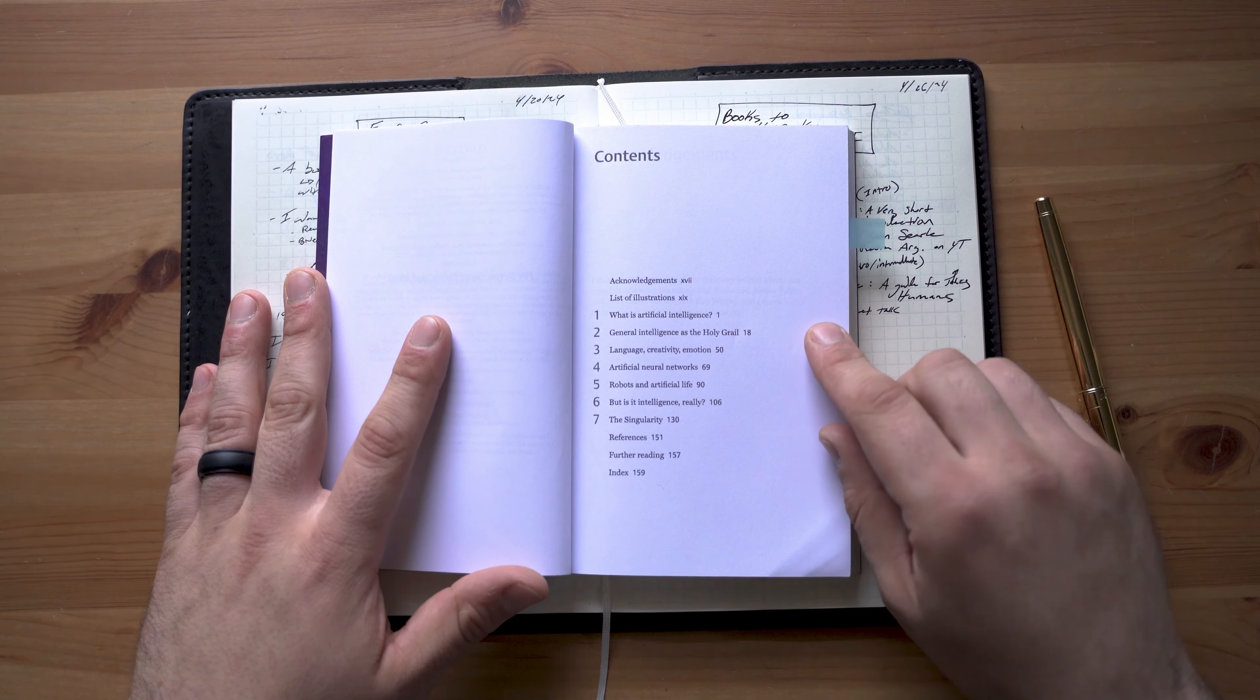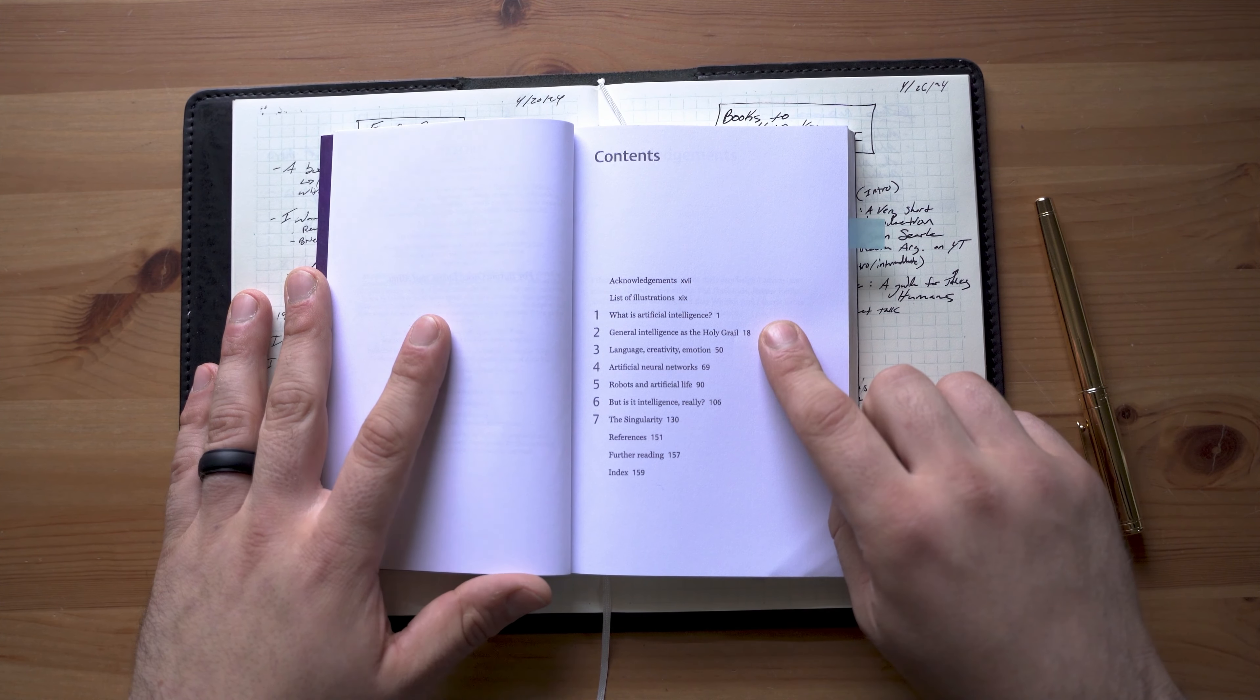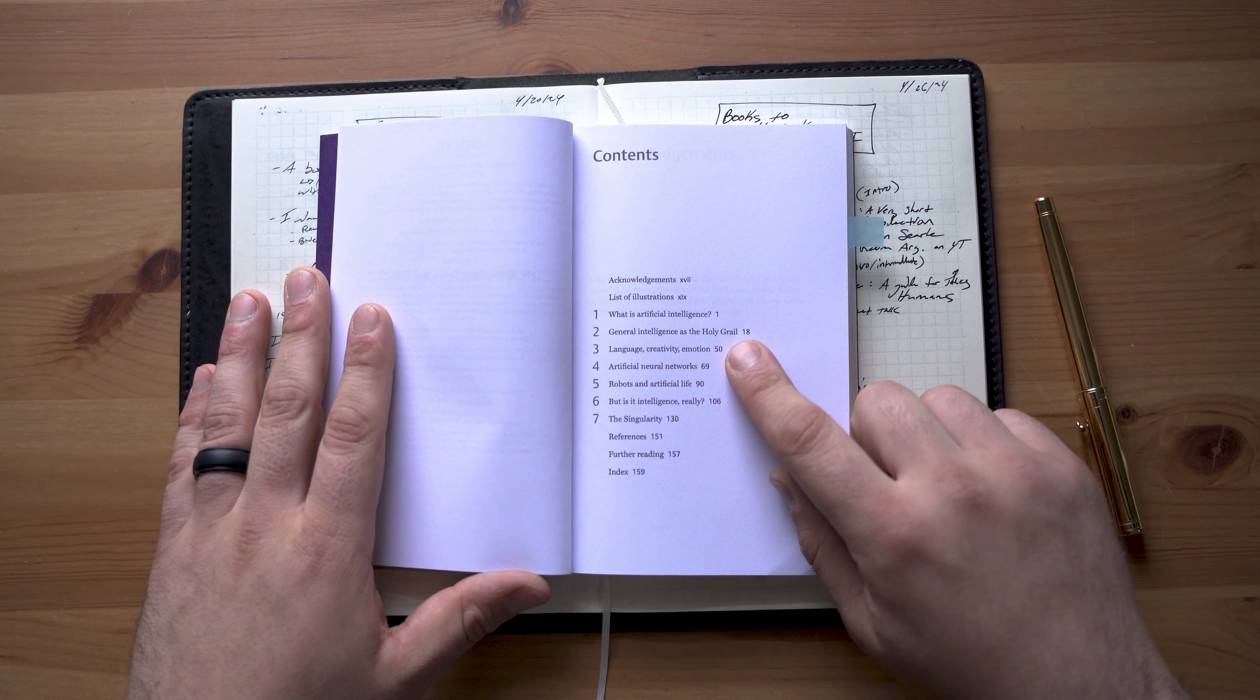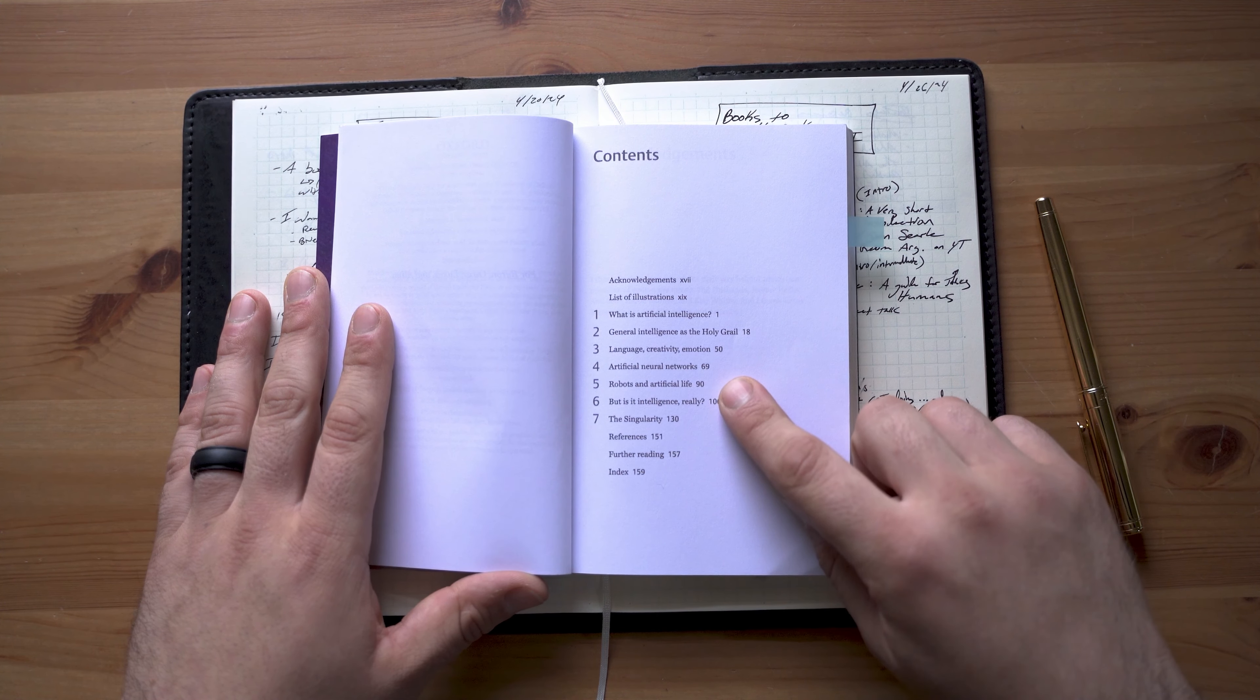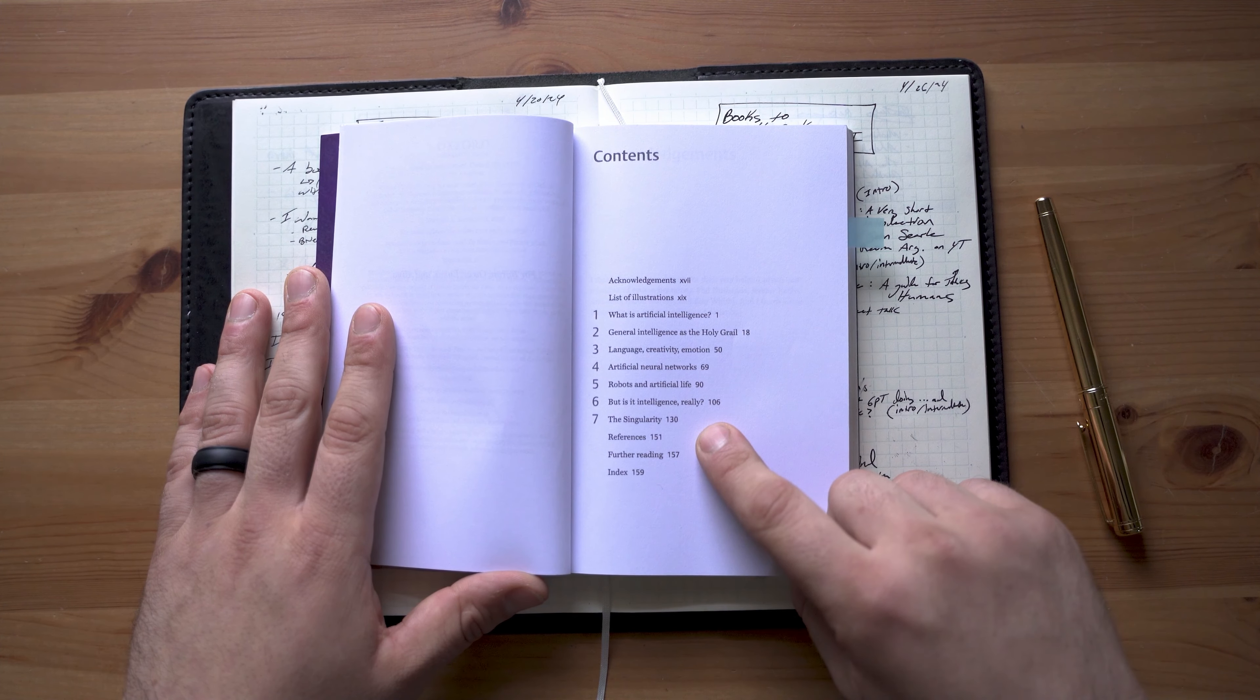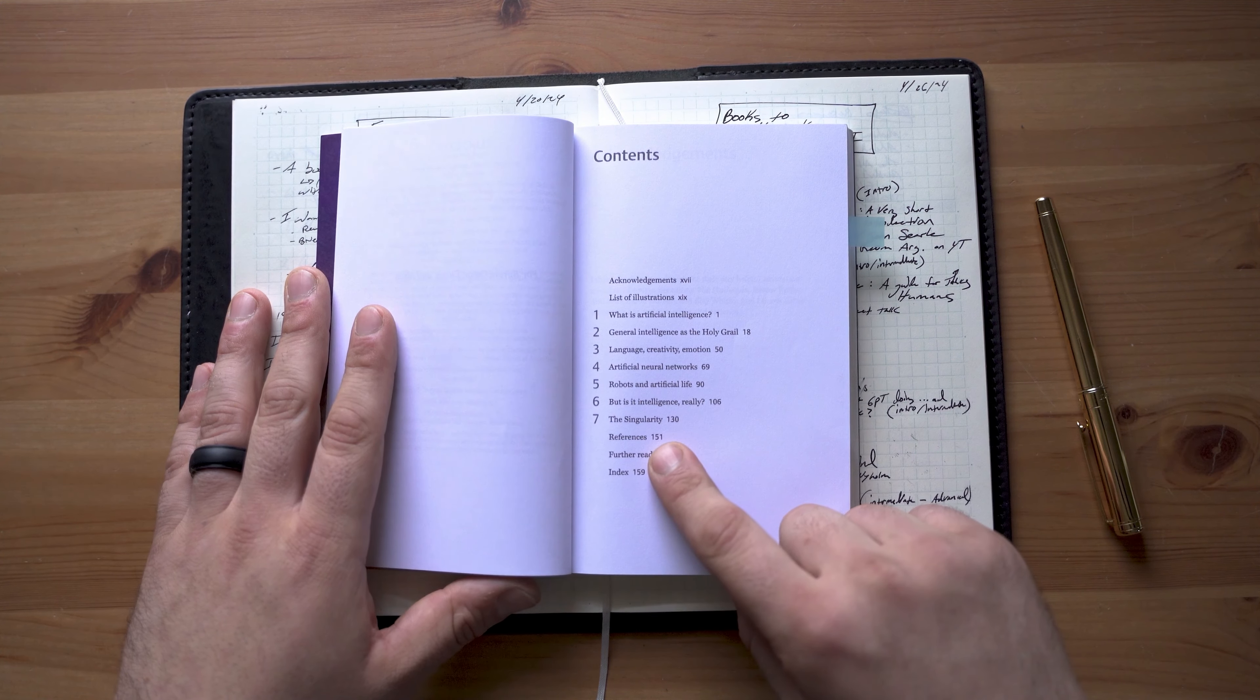Chapter one, what is artificial intelligence? Chapter two, general intelligence as the holy grail. Three, language, creativity, and emotion. Four, artificial neural networks. Five, robots and artificial life. Six, but is it intelligence really? And seven, the singularity. Six is the chapter dealing with philosophical problems with consciousness, sentience, and defining intelligence itself.